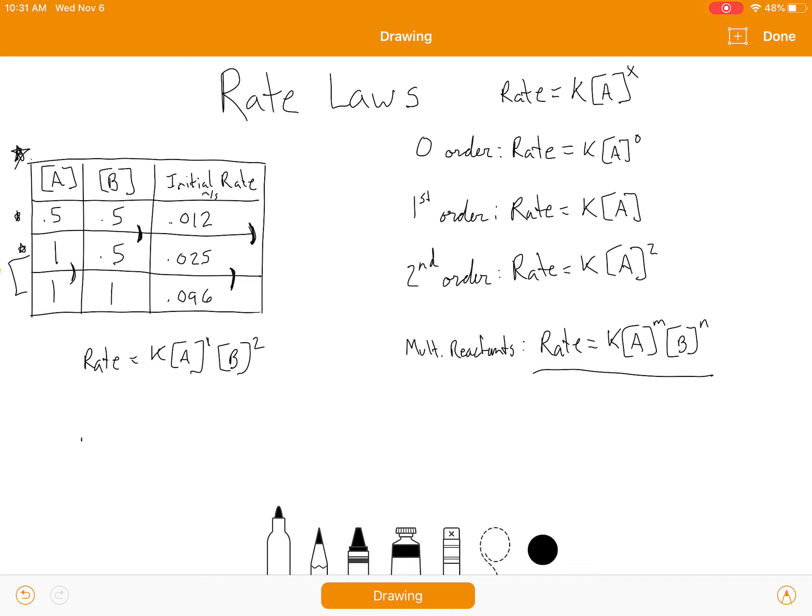So let's just do the last one. The rate is equal to 0.096. That is equal to K. The concentration of A is one. The concentration of B is one. Okay. So you have one times one squared, which is one, which means 0.096 is equal to K. And that's all you do. Like I said, most of the time they'd have another point that you could use to solve for that, but I hope that that is a little bit helpful.